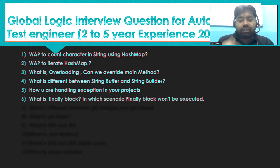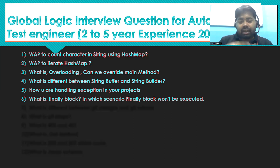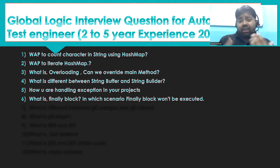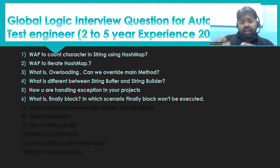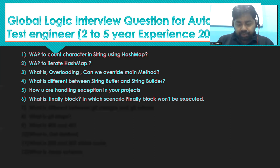Another question is: what is the finally block, and in which scenario will the finally block NOT be executed? The finally block comes from exception handling. We use it to execute mandatory code. If an exception is raised, the finally block must execute — but it won't execute if you write code outside the try block or if you use System.exit().